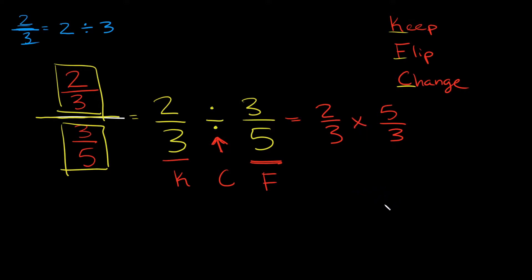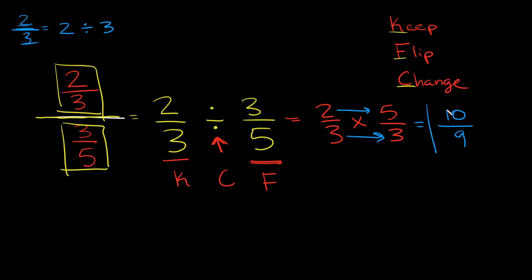Multiplying fractions is way easier than dividing them. When you multiply fractions you literally just multiply straight across. So what's 2 times 5? That's 10 — that goes in the numerator. And in the denominator, what's 3 times 3? That's 9. So the original problem 2/3 divided by 3/5 is equal to 10 over 9.